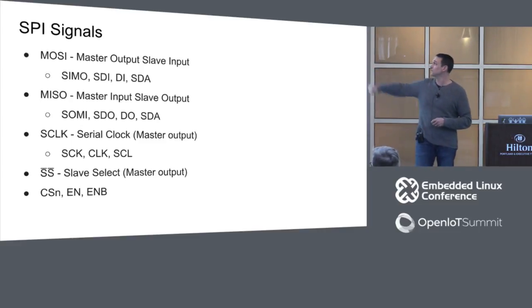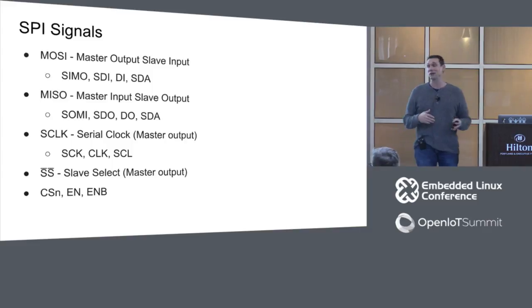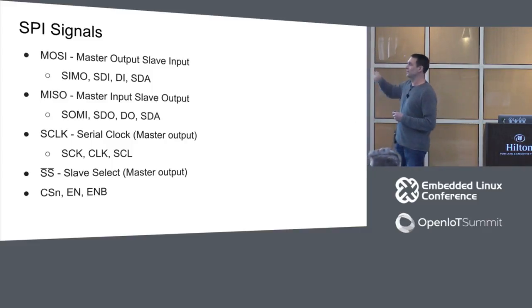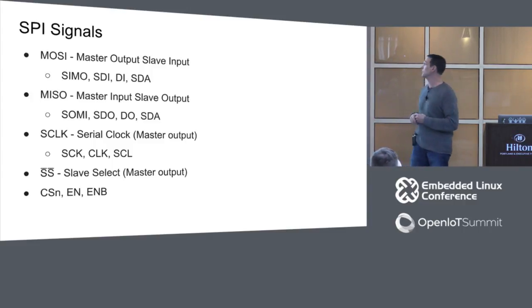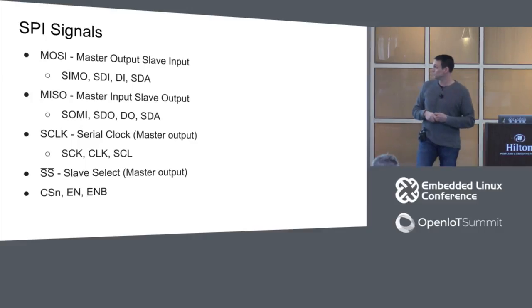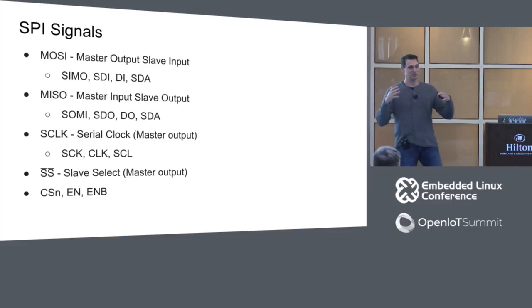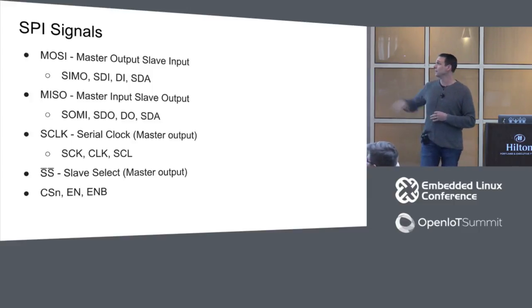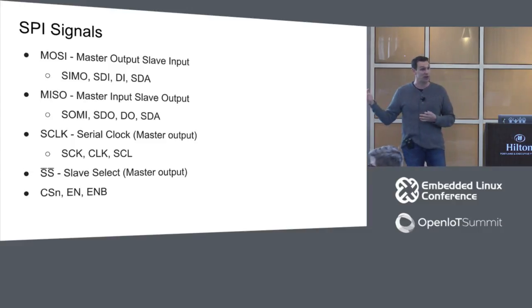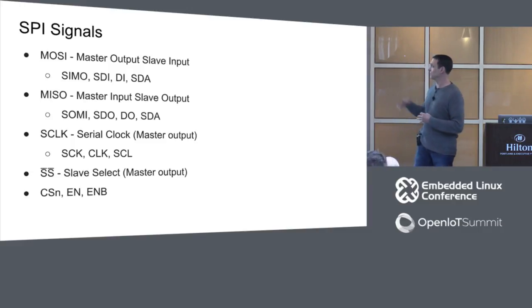MISO is master input, slave output — the name gives you a clue of direction. Same naming issues apply. Because it's a de facto standard, people adjust things in their version. Then you have your serial clock, which is a master output, and your slave select, also a master output. That's the basic original way SPI shows up. The slave select is also known as chip select, and that's how it gets referred to in the kernel as well.